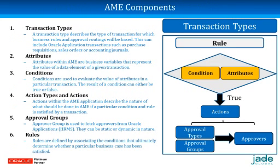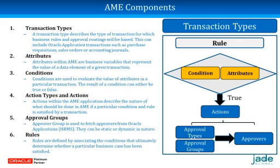The major components of AME are: transaction types, attributes, conditions, action types and actions, approval groups, and rules. A transaction type describes the type of transaction on which approval rules will be based. It can be an Oracle application transaction — such as a payable invoice, expense report, or accounting journal — or any other custom transaction type that can be created and integrated with AME.